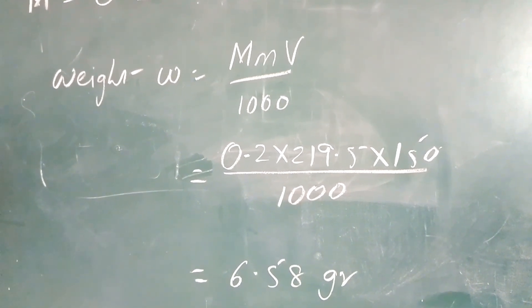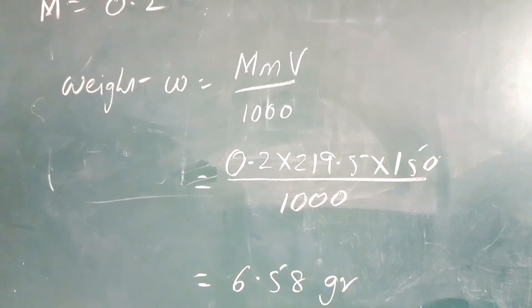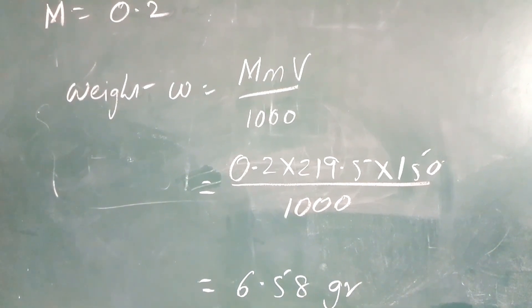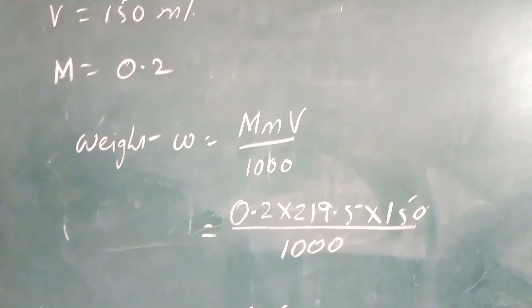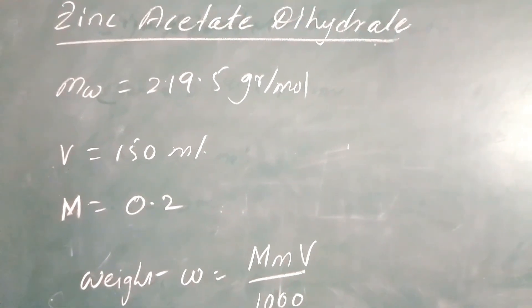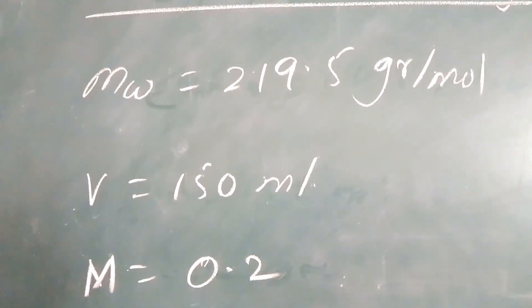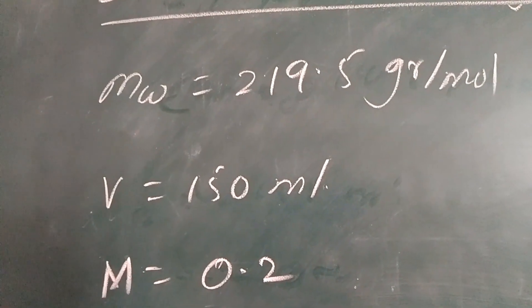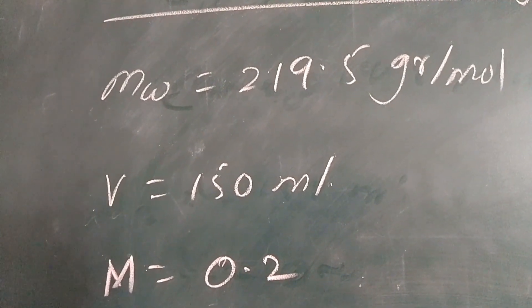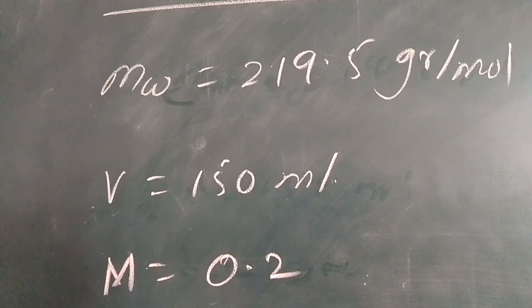Approximately I am going to take 6.6 grams of zinc acetate dihydrate and I will dissolve this 6.6 grams into 150 ml of the solvent which is the mixture of methanol and 2-methoxyethanol.